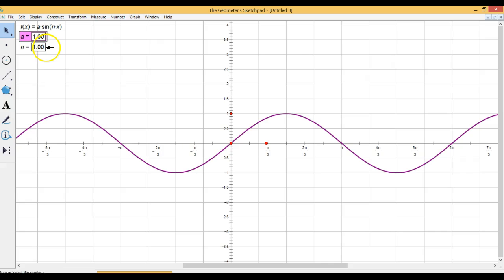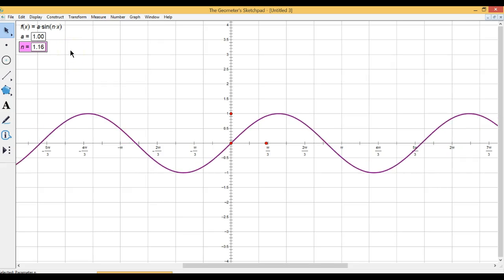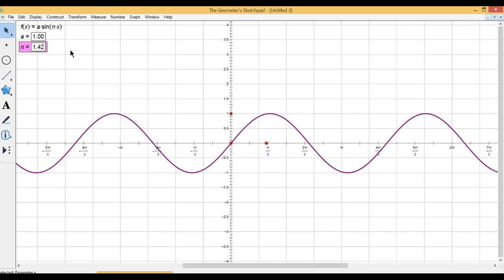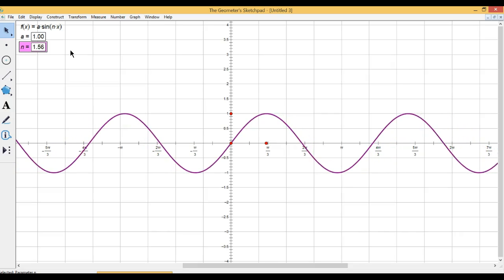Now, if we go and have a look at what happens when we change n around. So this value of n is what's in here as a multiple of x, when you take sine, at the moment it's just sine x. What about when we make it sine 2x? Well, let's have a look at the result of that.